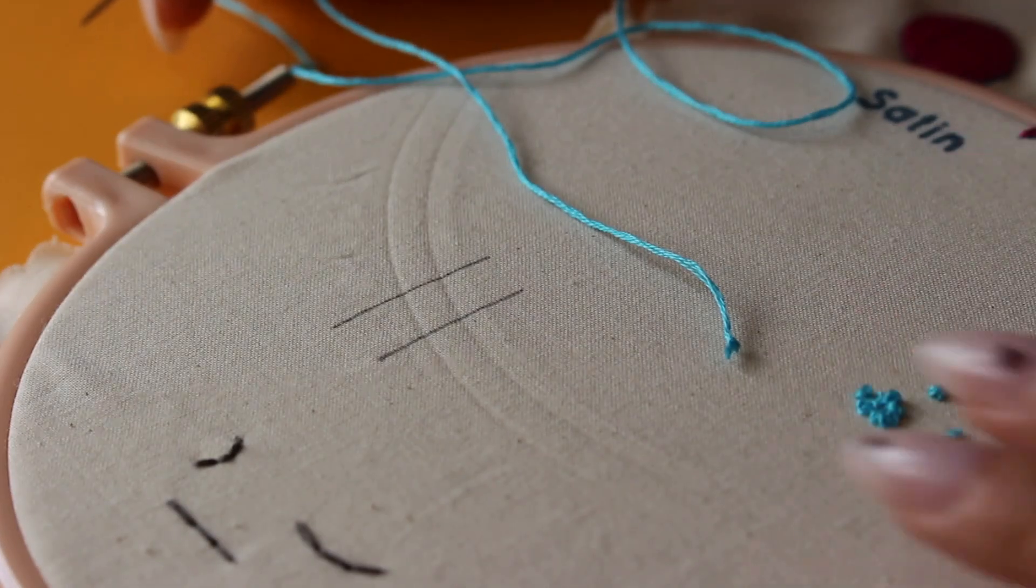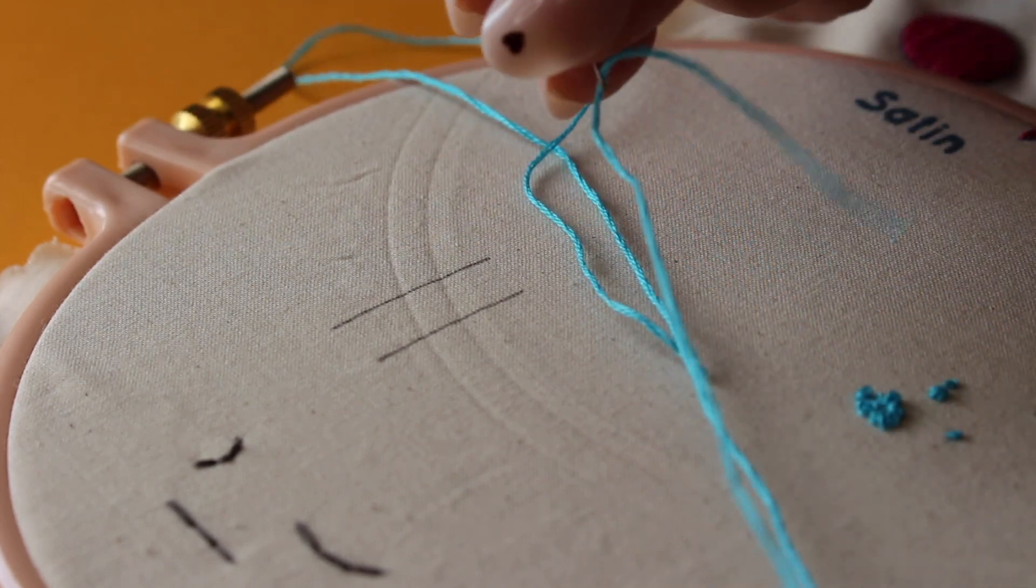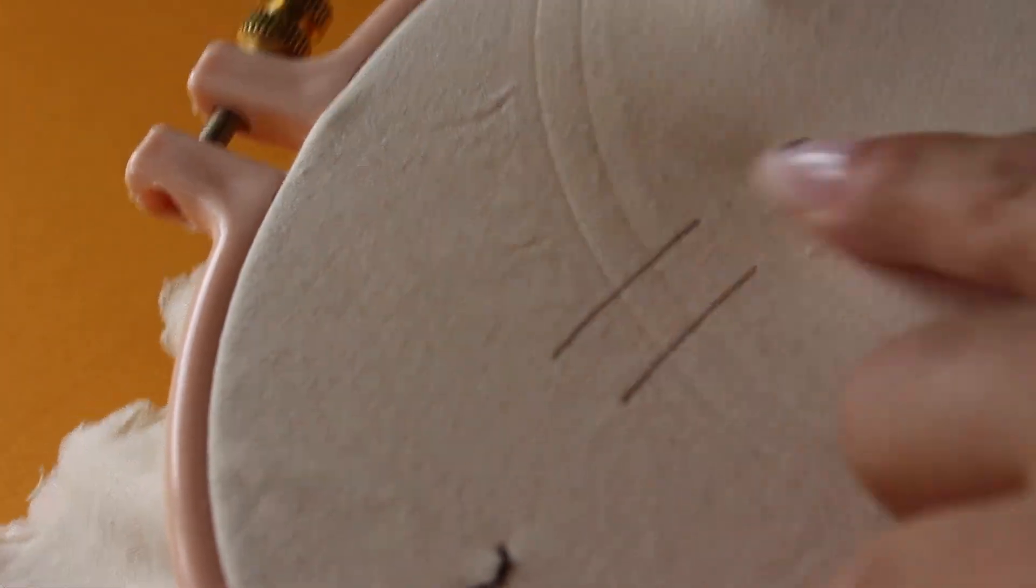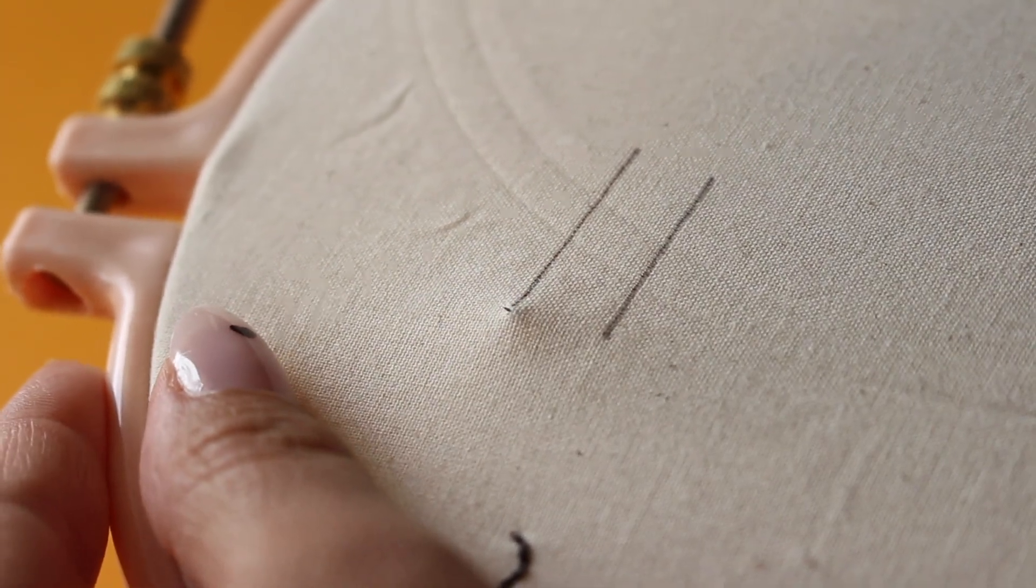I'm going to start with tying a knot at the end of our thread and then leaving a tail on the opposite side. I'm going to just use straight lines as an example for the stitch, but you're going to want to start by coming up from the bottom at one of your ends and pulling all the way out.